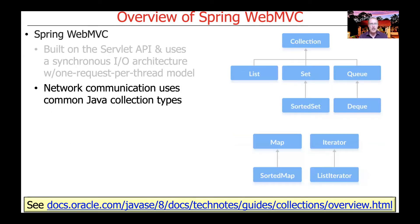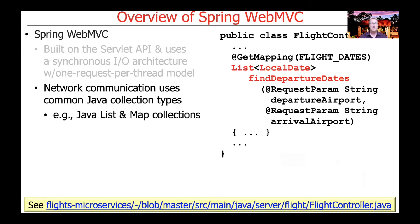With respect to how communication takes place with Spring MVC, you typically use good old Java collection types — things like Java lists or Java maps. Here is a simple example from the flight controller in the flights microservices app, where we have an endpoint method called findDepartureDates that takes the departure airport and arrival airport and returns a list of dates in local date format.